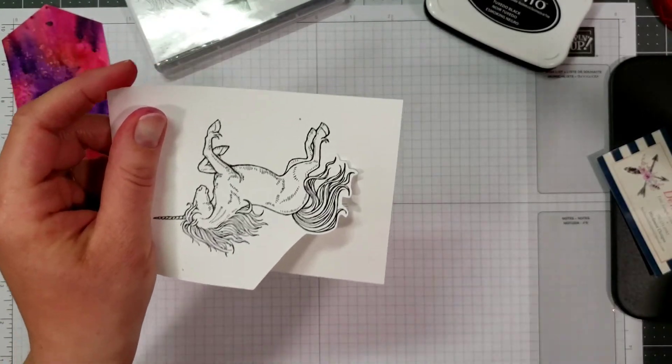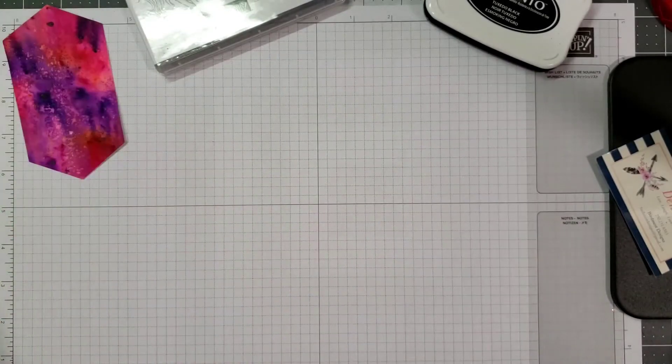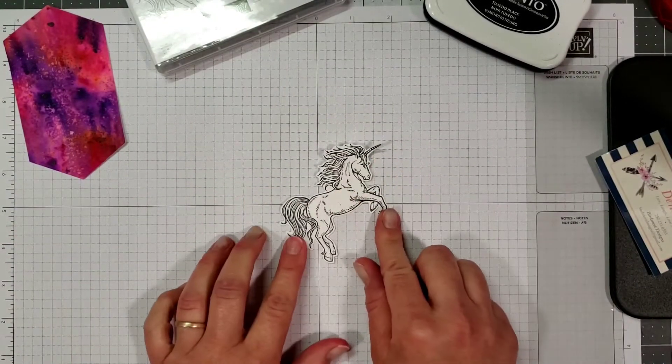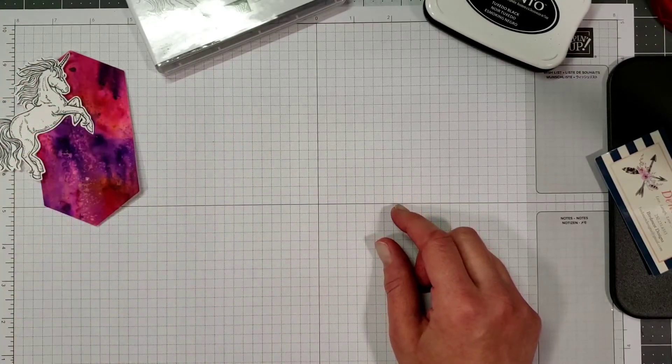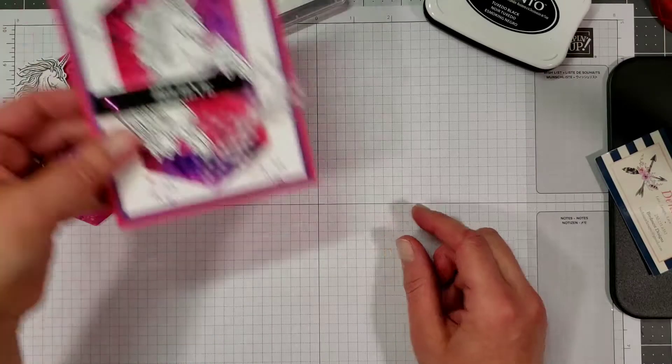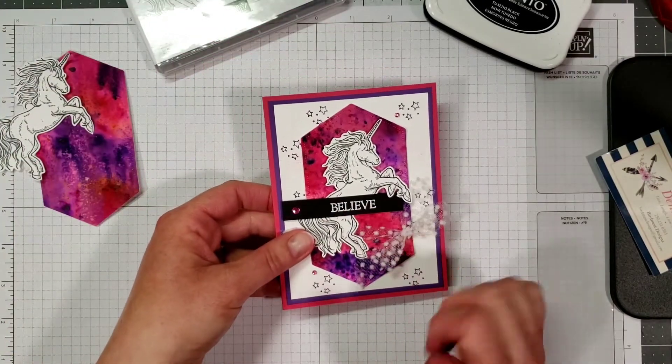Now I've shown you that I do have one already pre-cut so we're not going to sit here and watch me cut the whole thing out. So here's our unicorn, we've got our color base. Next thing I want to do is the salutation. Here I've got believe which is also from the leave a little sparkle stamp set.